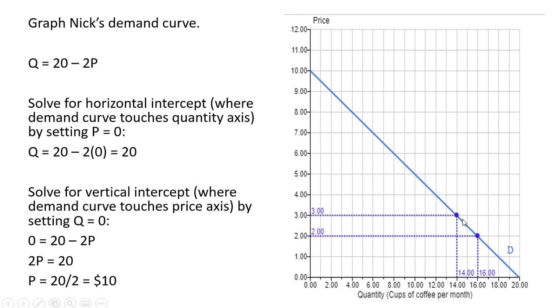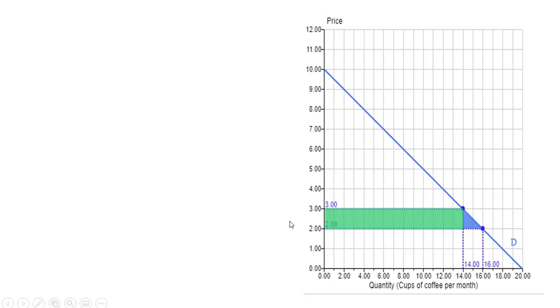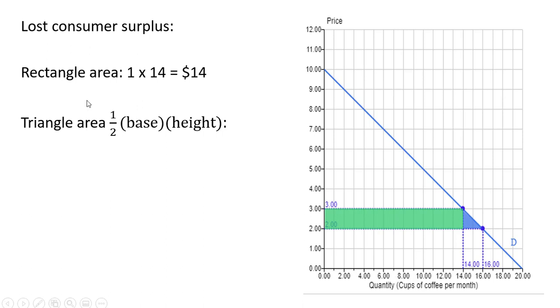The next step is to look at the decrease in consumer surplus. This area here represents the decrease in consumer surplus, consisting of a rectangle region and a triangle region. The rectangle area is 1 by 14: 3 - 2 = 1 and 14 - 0 = 14, so this area is $14.